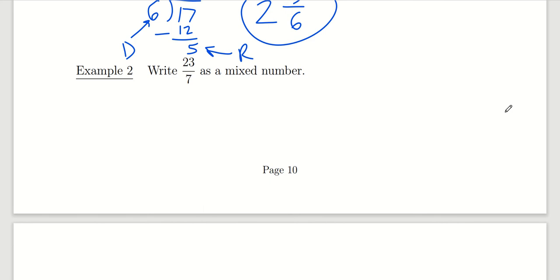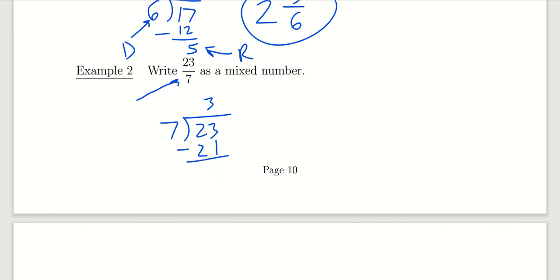We can do this for another example. If I want to change 23 over 7 into a mixed number, notice that we can do this because it is an improper fraction — the numerator is larger than the denominator. So we're going to do some long division. 7 goes into 23 three times without going over. 3 times 7 is 21. Subtract, we get 2. So the mixed number is the quotient, 3, plus remainder over divisor: 3 and 2 sevenths.